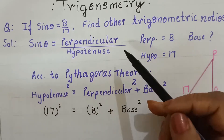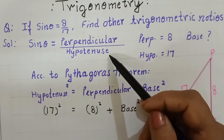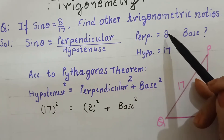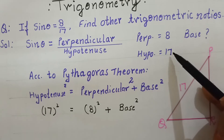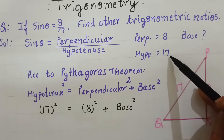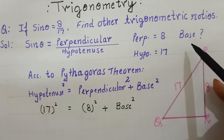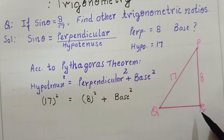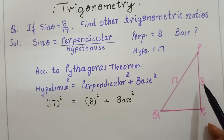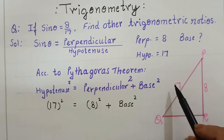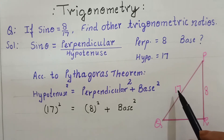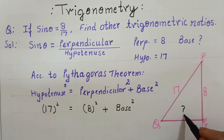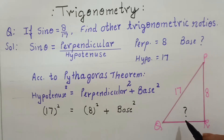So sin theta formula is perpendicular over hypotenuse. So perpendicular is 8 and hypotenuse value is 17. We will calculate the base. In right angle triangle PQR, perpendicular is 8, hypotenuse is 17, but base unknown hai.